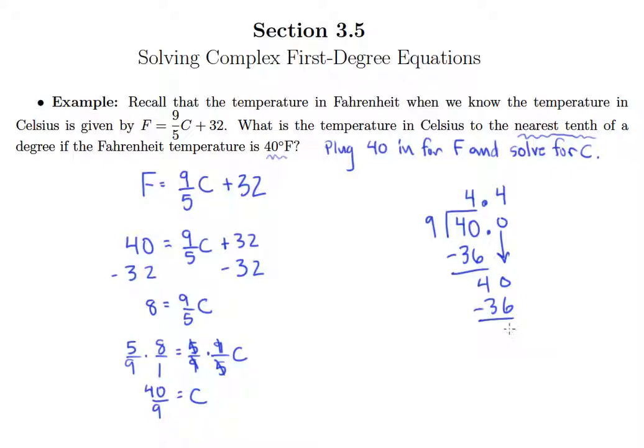And notice what we actually have is just 4 repeating forever. But it did ask us to round to the nearest tenths. So we'll just note that the hundredths digit is also a 4. So that means we leave this 4 alone. And so our Celsius temperature is approximately 4.4 degrees Celsius.